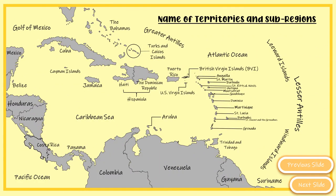When looking at the map, you need to know the names of the territories. You have the Caribbean Sea situated right in the center. You'll also see the Gulf of Mexico in the top left corner of the map on the screen. In the bottom left you'll see the Pacific Ocean, and situated east you'll see the Atlantic Ocean.